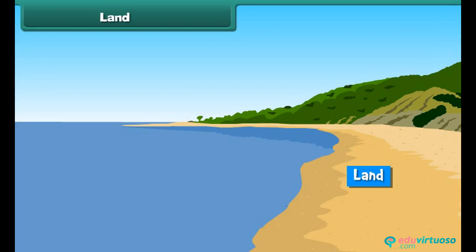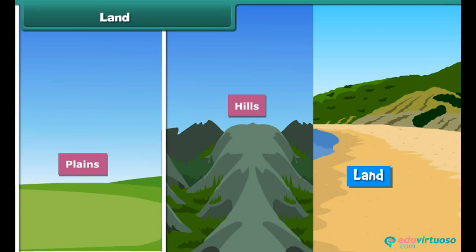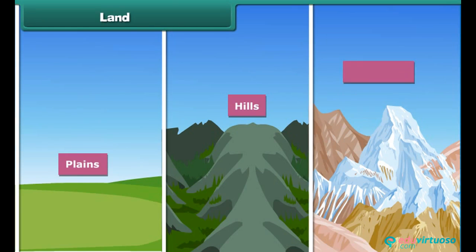Land is that part of Earth's surface that is not covered with any water body. Plains, hills and mountains are examples of land. Come, let us learn about them.